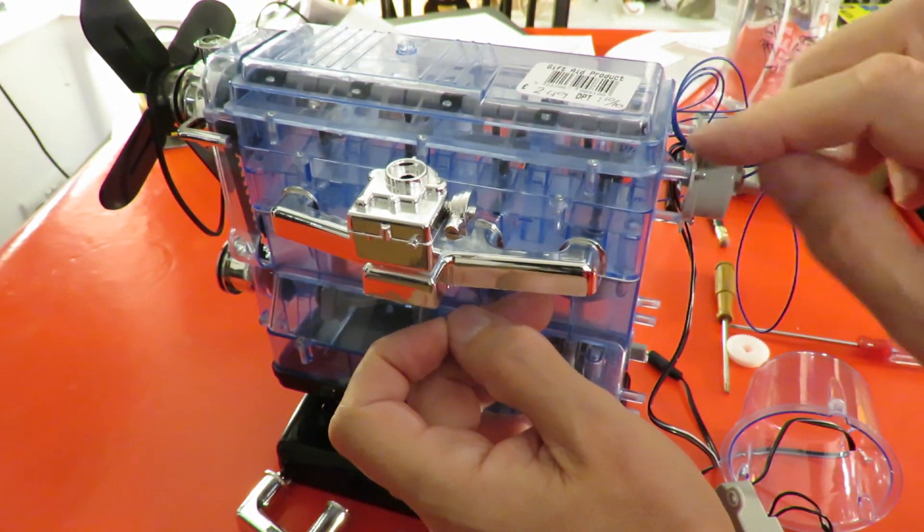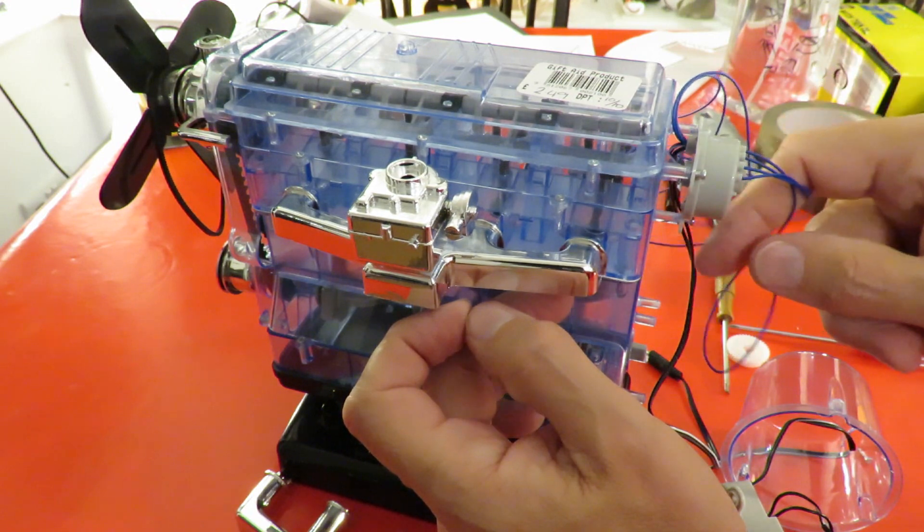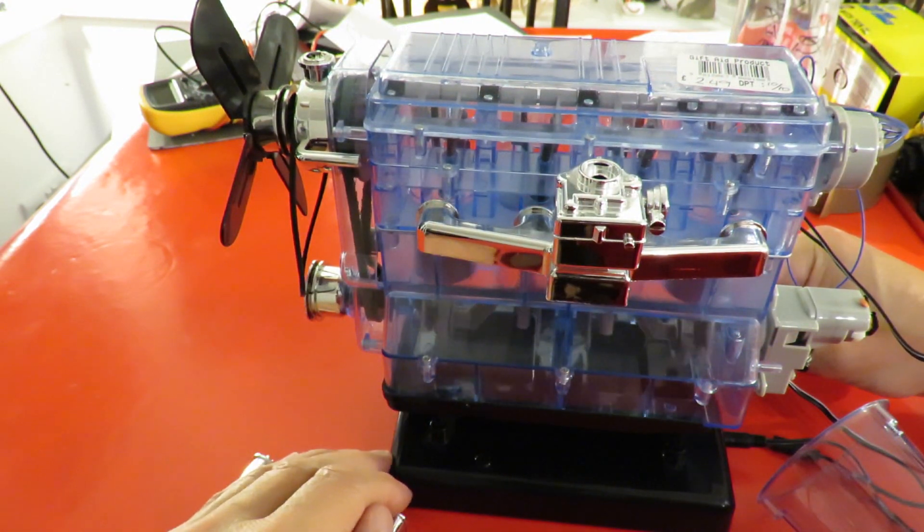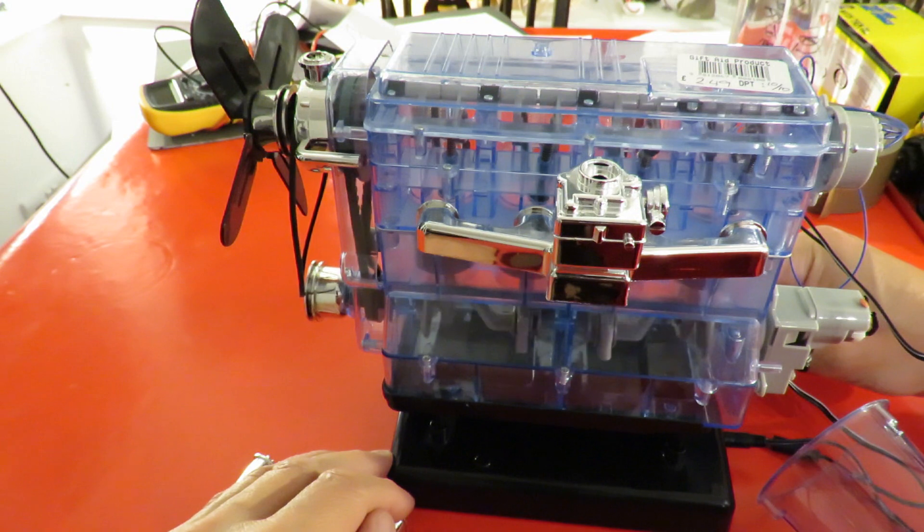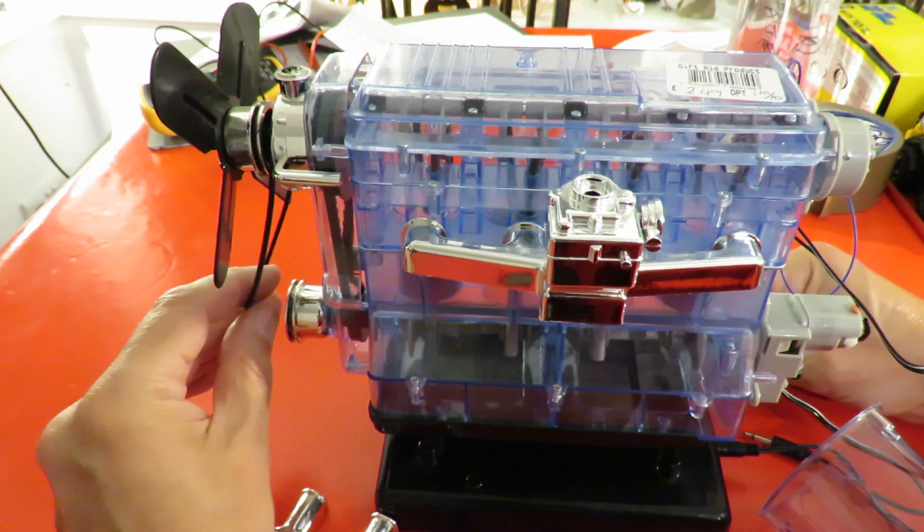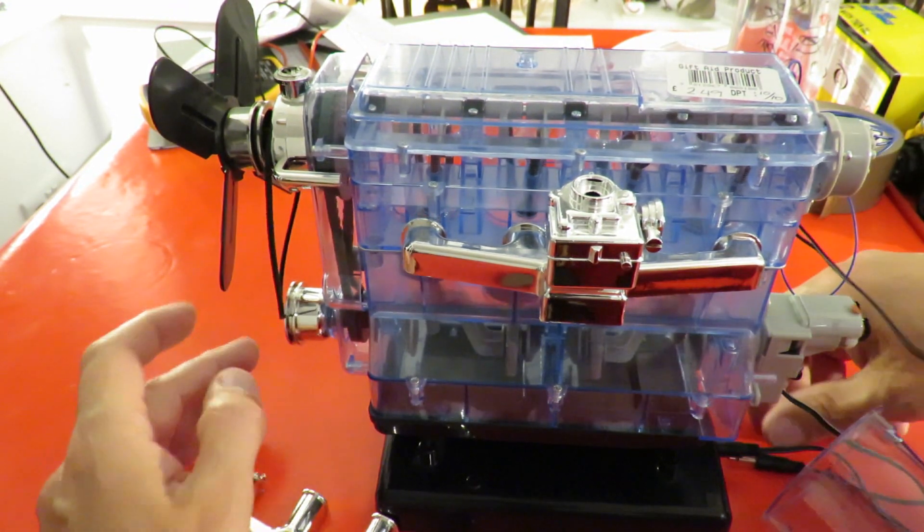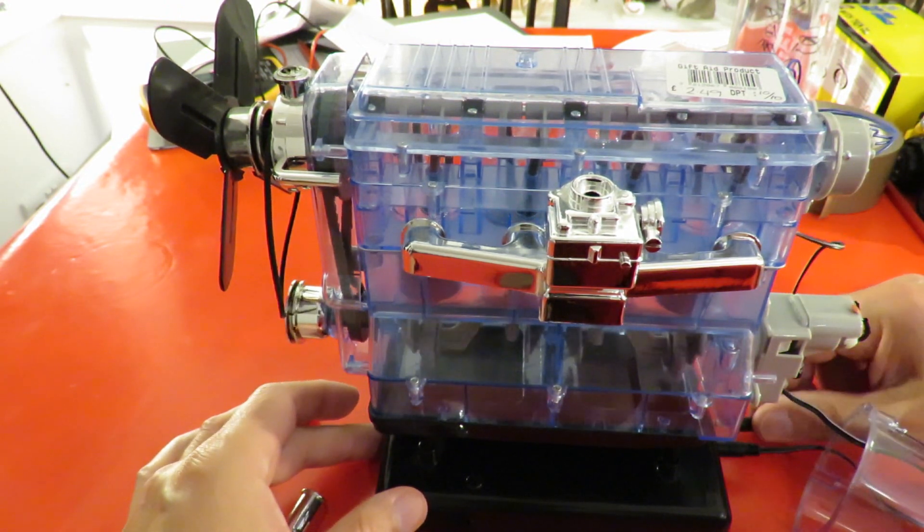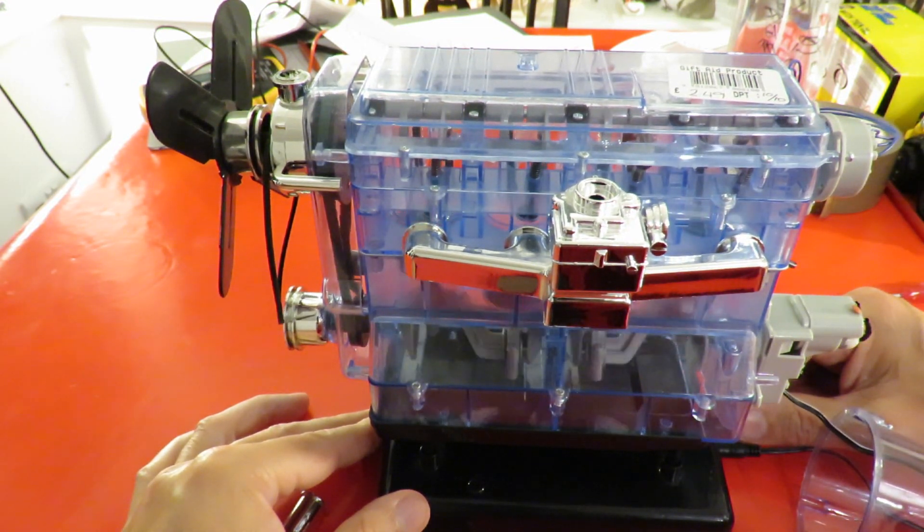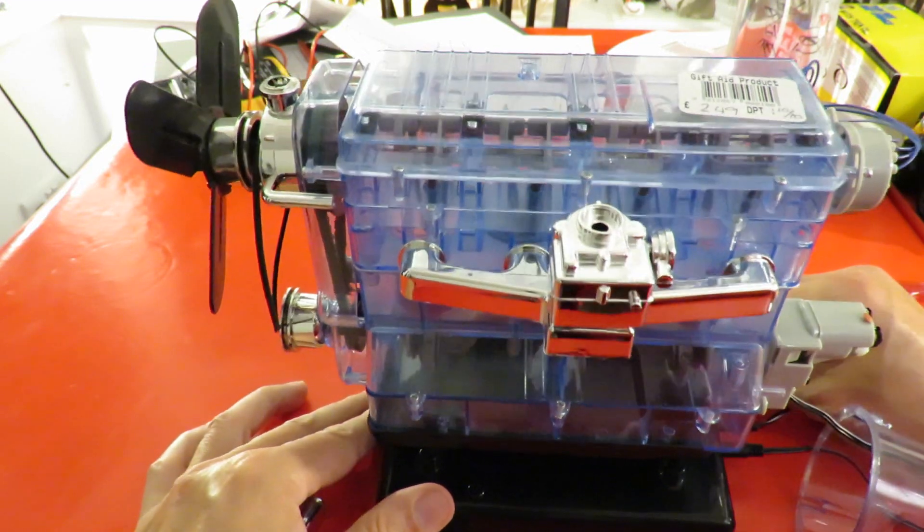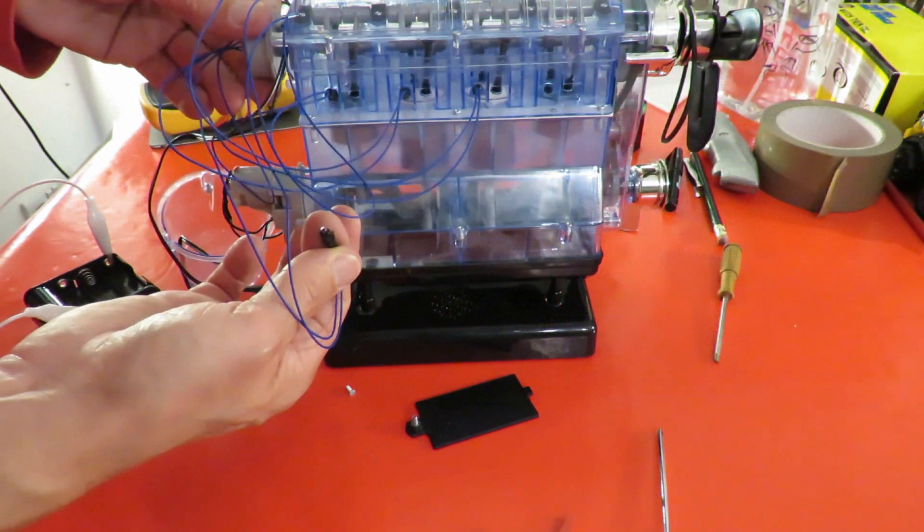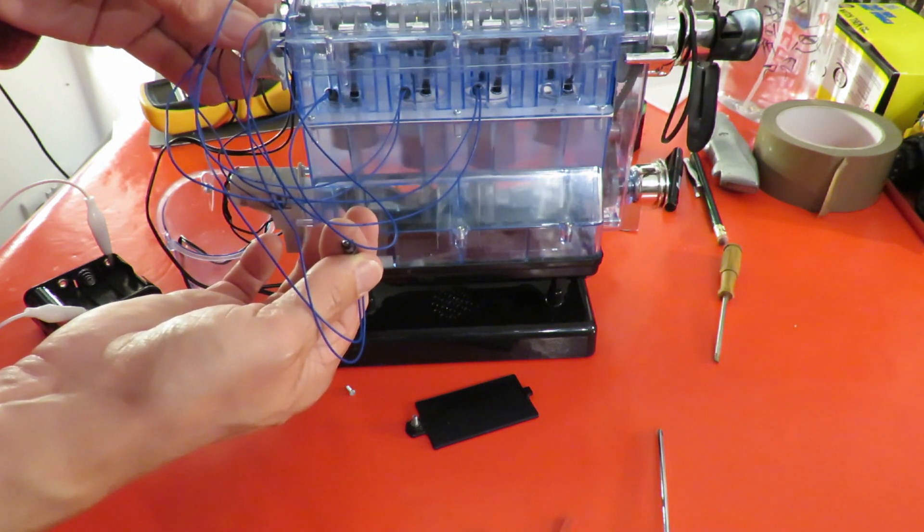At this end, that looks like a distributor. I expect there's some contacts in there, so as it turns round it should make those LEDs light up. That seems to be alright now. Maybe it was the extra tension there that was making it struggle. I don't see any LEDs flashing. No, we're not getting any lights.